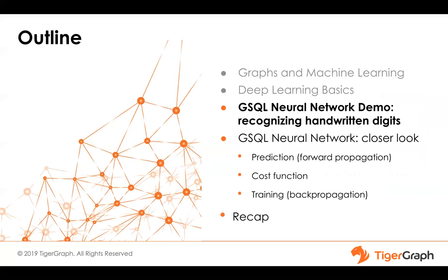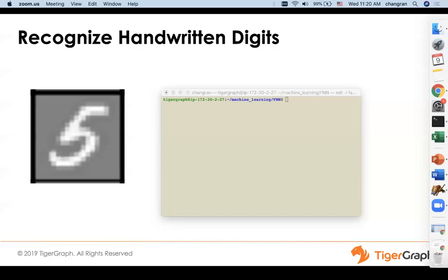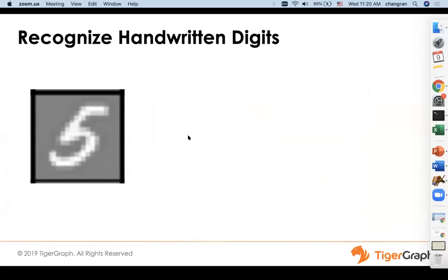I'm going to hand it over now and stop sharing my screen. Hopefully Chung Run is ready and he's going to take you through our working example. Hello everybody, this is Chung Run, and first I want to thank Victor for the very insightful introduction of graph and deep learning. Now I'm going to show you how I built a neural network using TigerGraph.